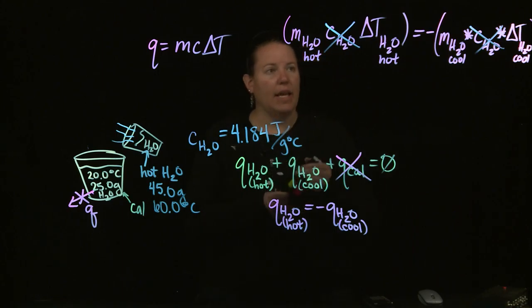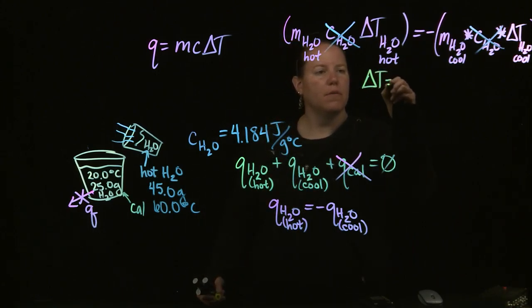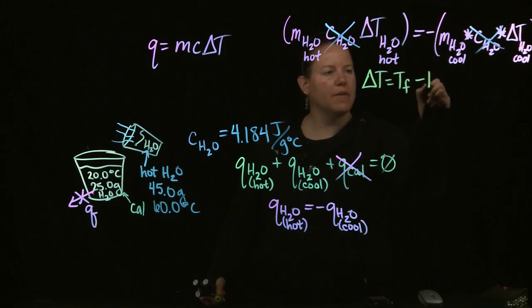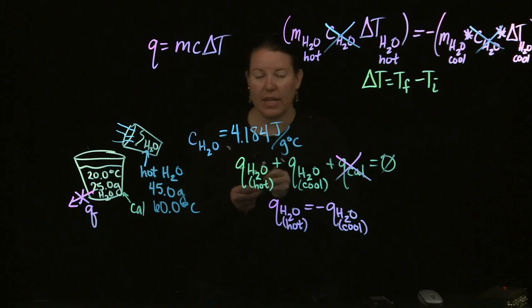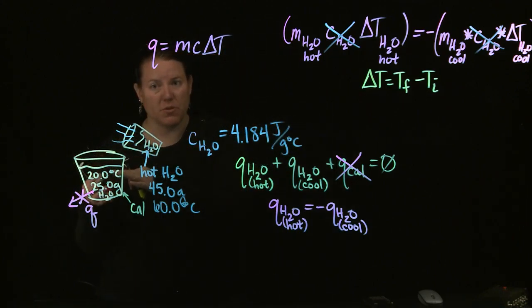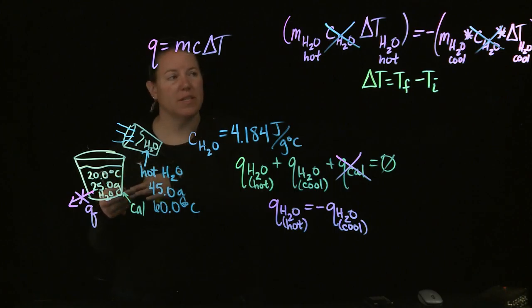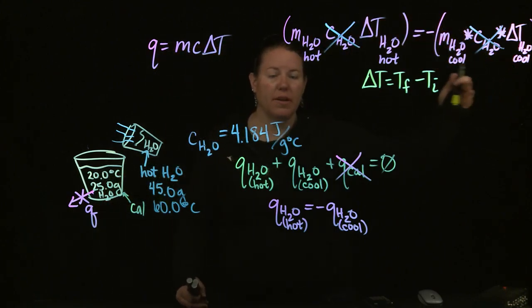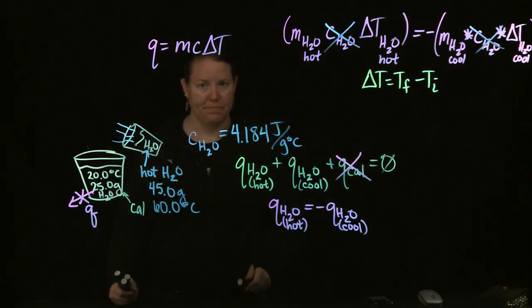Now if I want to put in for delta T, I know that delta T is equal to T_final minus T_initial. And what I have to ask myself is what's changing here? Well, like I said, in the end the water has to be the same temperature. So the final temperature is the same for every component in the system that you can label.